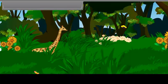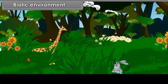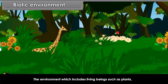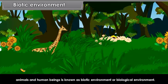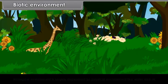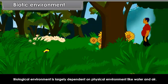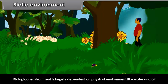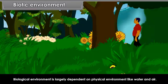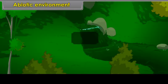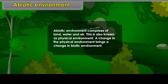Biotic environment. The environment which includes living beings such as plants, animals and human beings is known as biotic environment or biological environment. Biological environment is largely dependent on physical environment like water and air. Abiotic environment comprises of land, water and air. This is also known as physical environment. A change in the physical environment brings a change in the biotic environment.